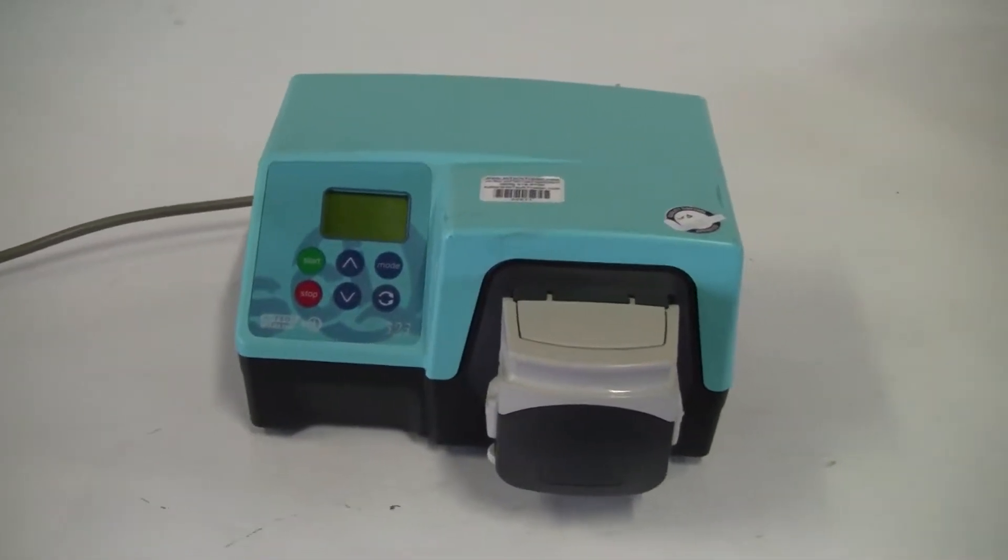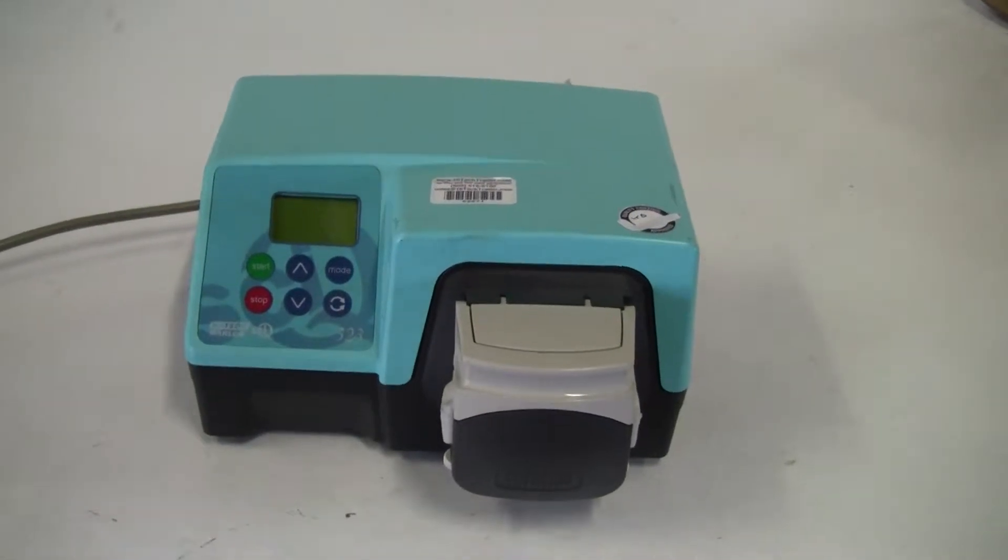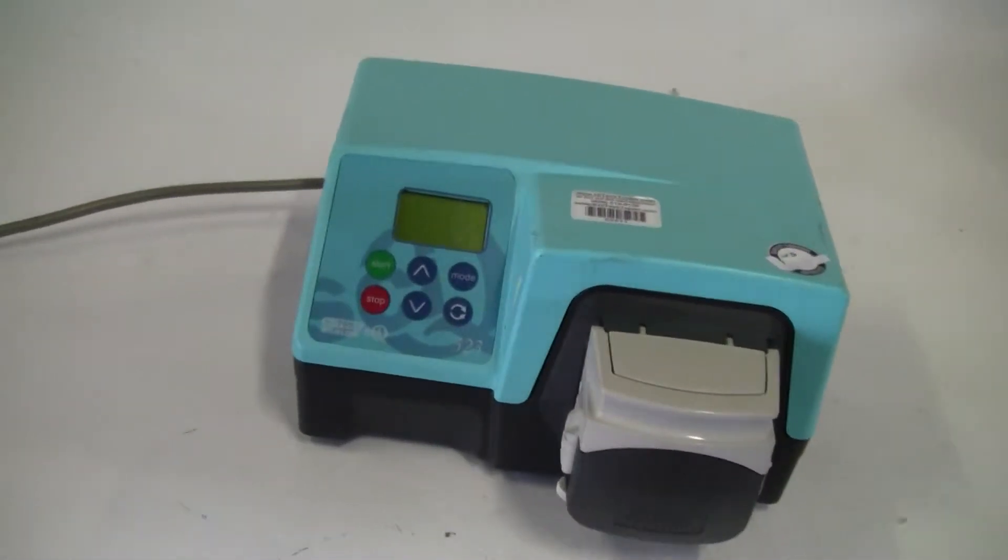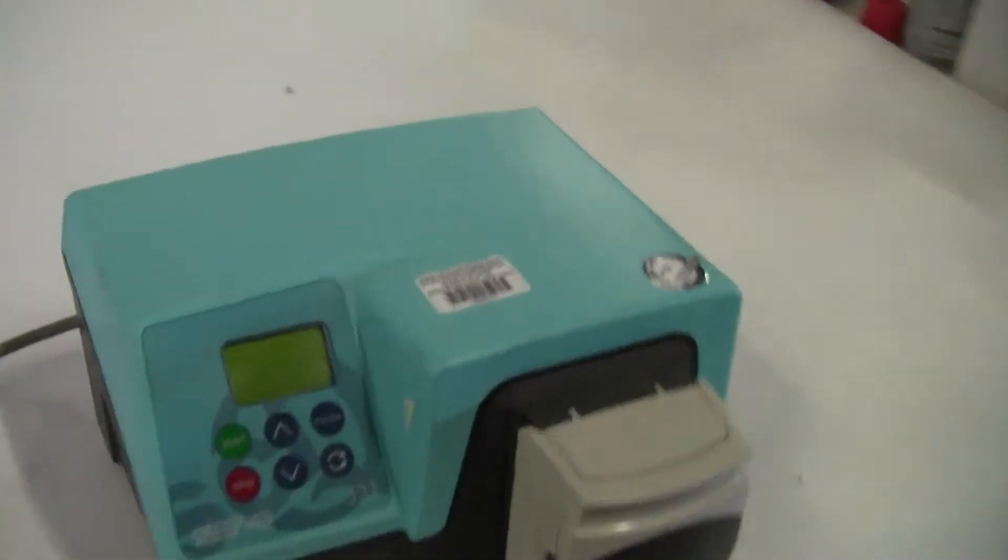Hi, this is Jim from HitekTrader. We're looking at the Marlow Watson model 323 peristaltic pump. The pump has flow rates from 0.45 to 2,000 milliliters per minute.